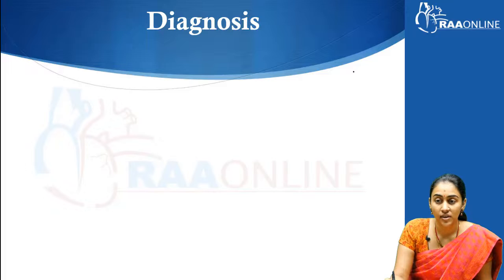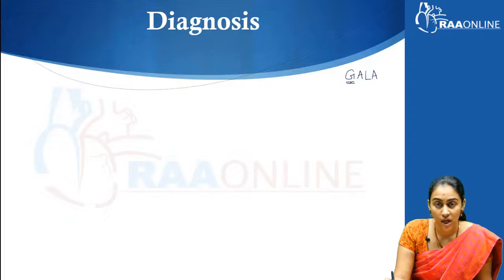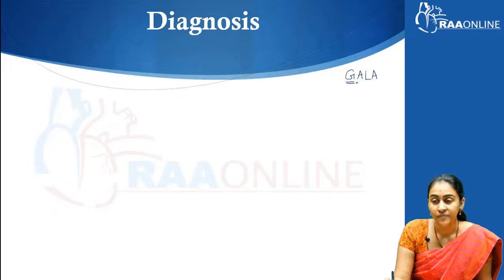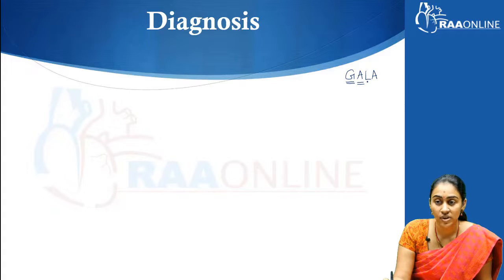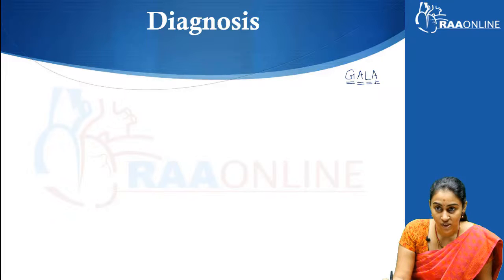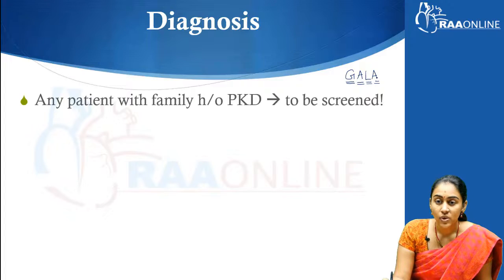I generally remember the extra-renal manifestations as GALA. G for the GI manifestations, which range from diverticuli and perforation to hernia. A for aneurysms presenting with intracranial or subarachnoid hemorrhage. Another A for aortic regurgitation, and L for liver cysts.